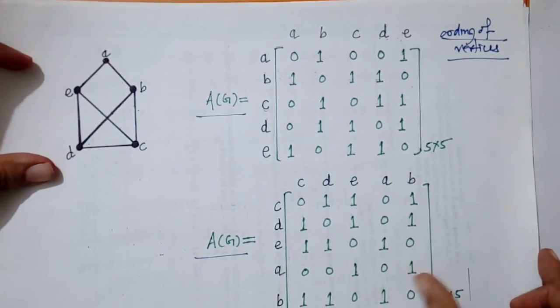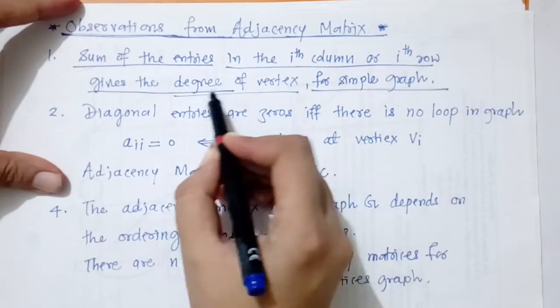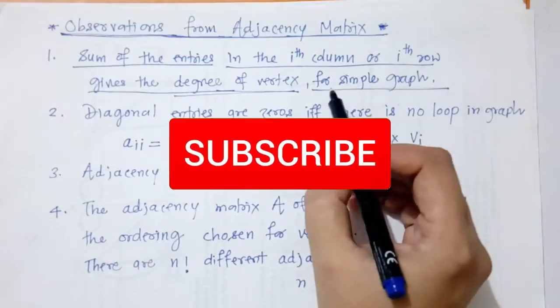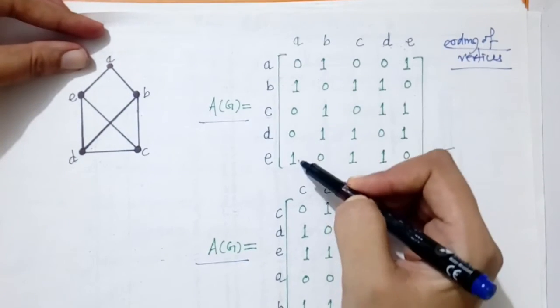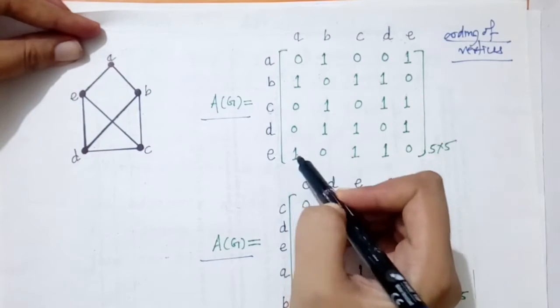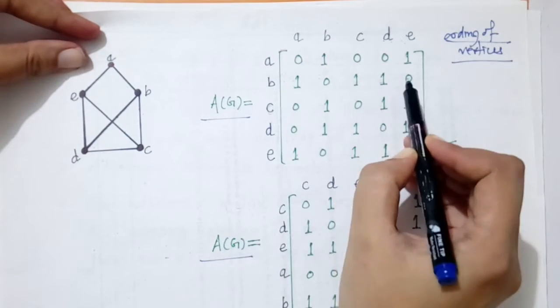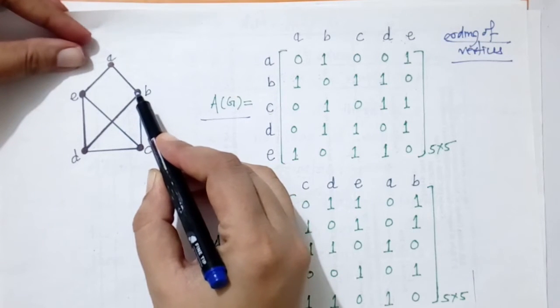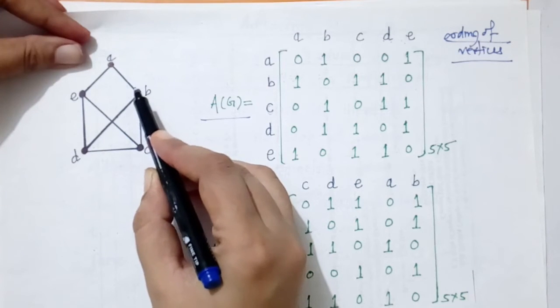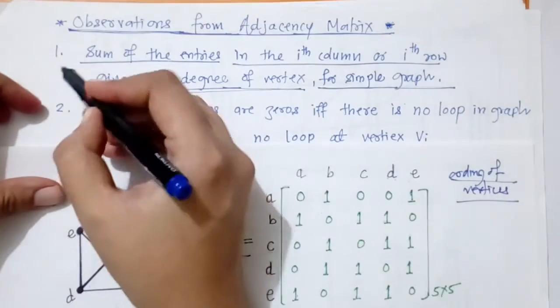From the adjacency matrix we can make some observations. First, for a simple graph, the sum of entries in the i-th row or i-th column gives the degree of the vertex. For example, checking row or column A gives a sum of 2, representing the degree of vertex A. Checking row or column B gives 3, representing how many edges are incident on vertex B.